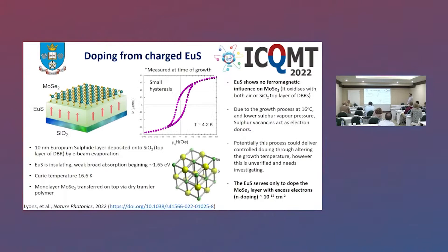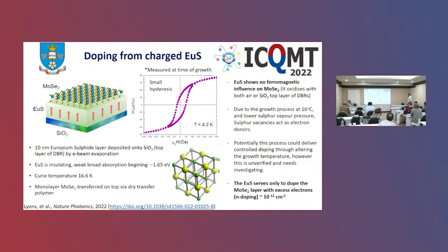In this work we use a thin film of europium sulfide (EuS), deposited onto the top layer of our DBR — silicon dioxide — via e-beam evaporation. EuS is an insulating ferromagnetic material with a very weak and broad absorption beginning at about 1.65 eV, and a Curie temperature of about 17 Kelvin. The MoSe2 monolayer is then transferred on top via PDMS transfer. In our studies, we actually see no ferromagnetic influence of EuS on the MoSe2, which we think is because the PDMS transfer creates a very weak interface, inserting a barrier between the two layers.